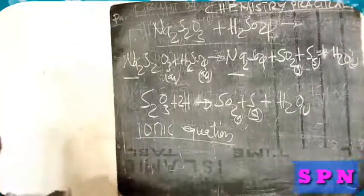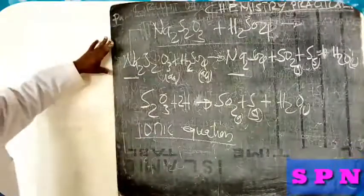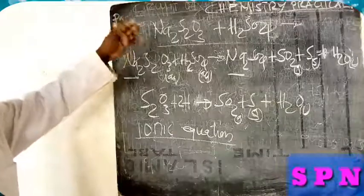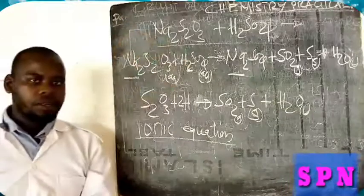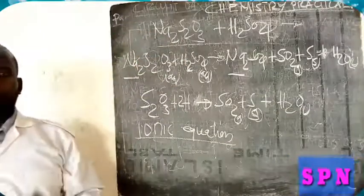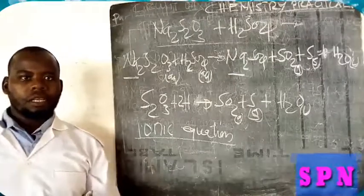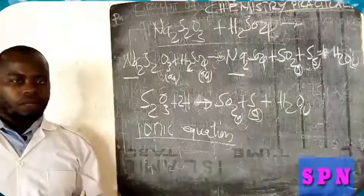So now the ionic equation or balanced chemical equation of sodium thiosulfate and sulfuric acid appears that way.